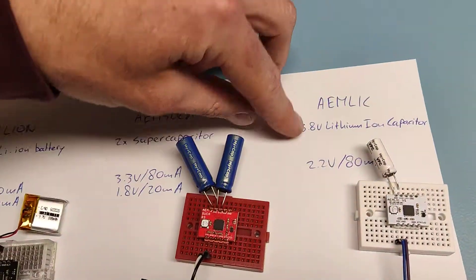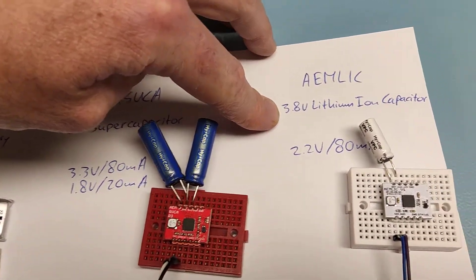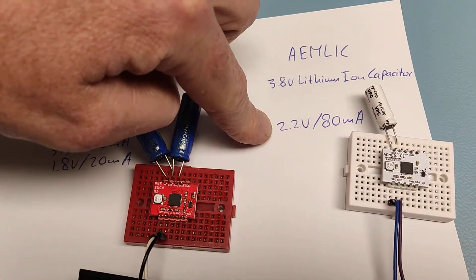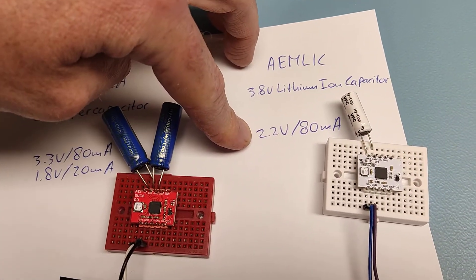This board has a storage unit which is a 3.8 volt lithium-ion capacitor. From that, I could create a 2.2 volt regulated output voltage.